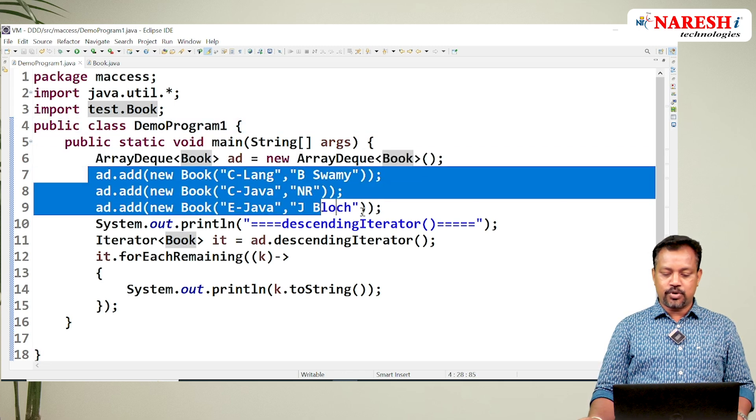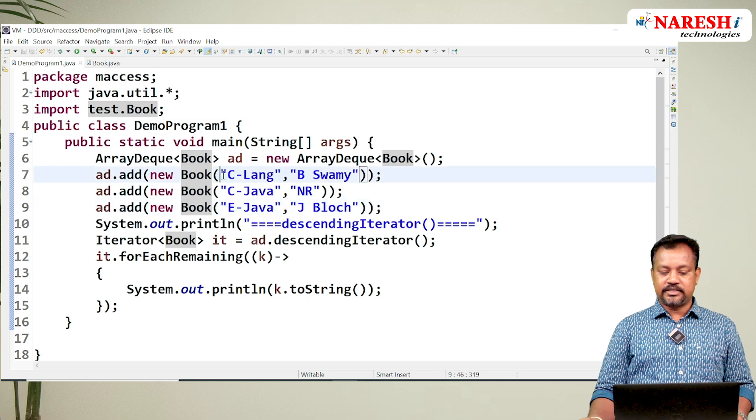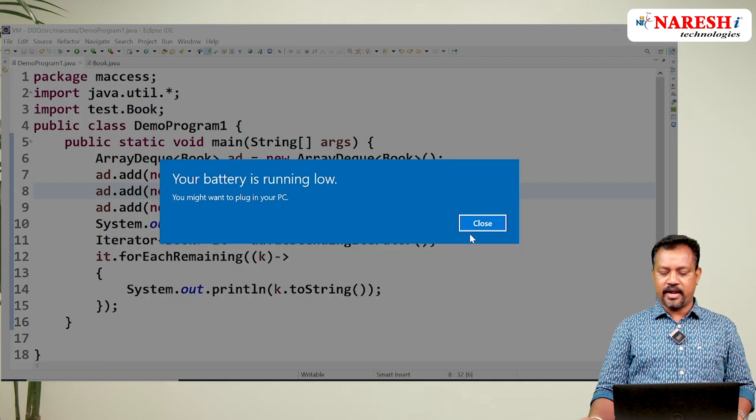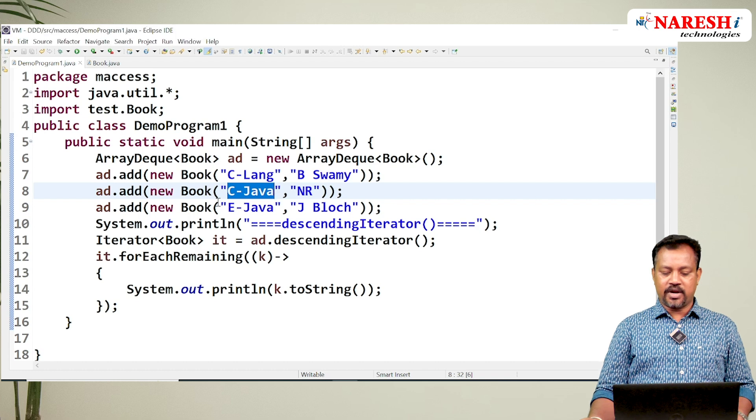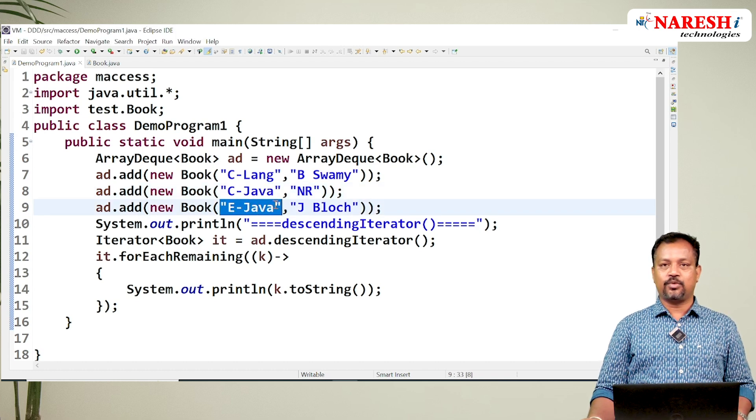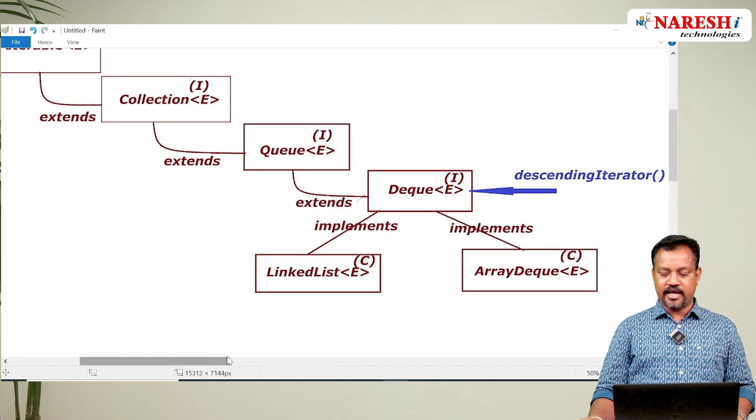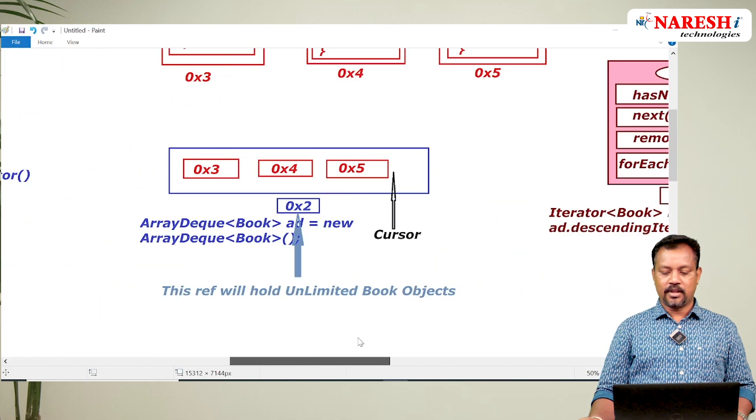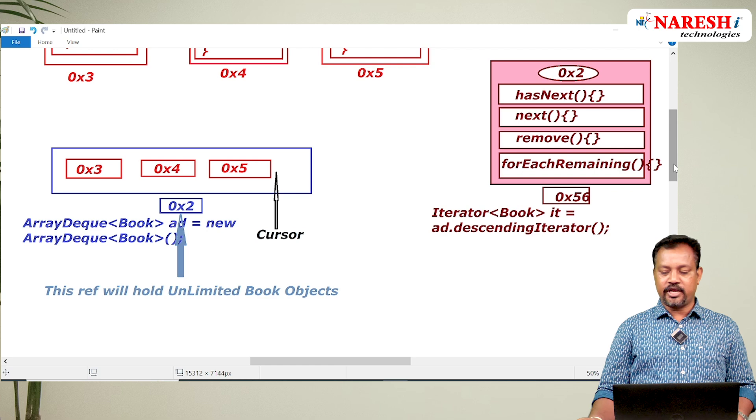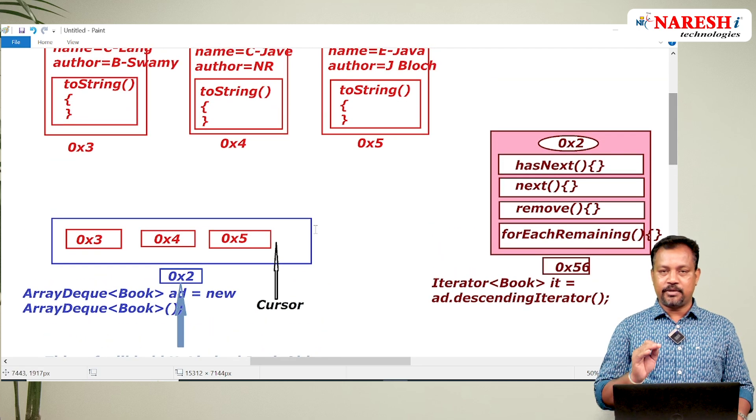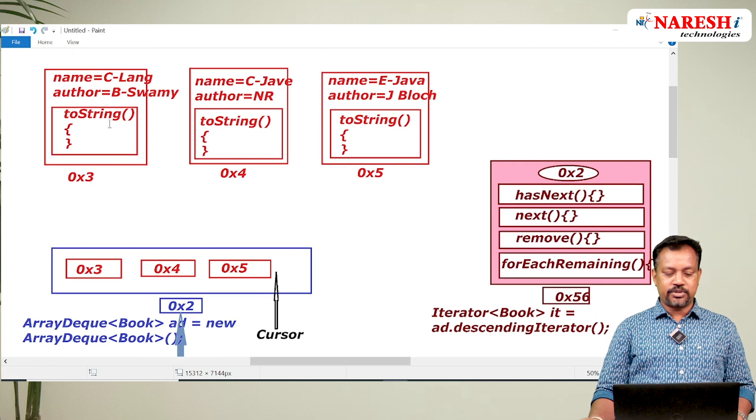I am adding three books. Example: C Language, some Core Java indirectly, and one is Effective Java - roughly I took three books here. I shown the representation in the diagram also here. If I am adding three books to the ArrayDeque, you can see this diagram where three books are added to ArrayDeque.